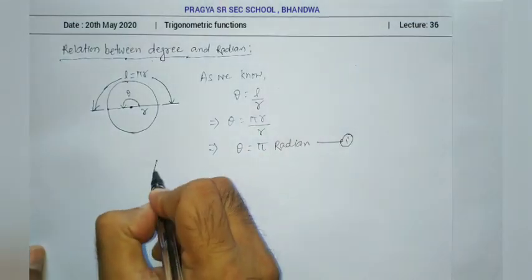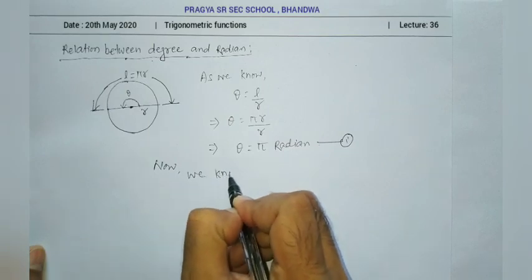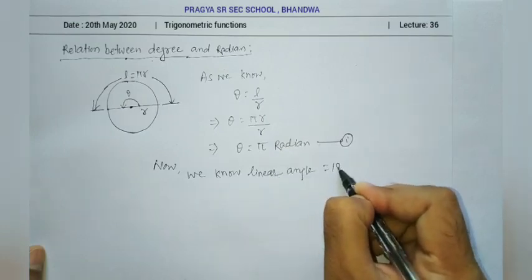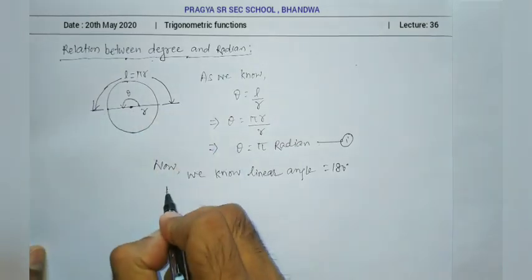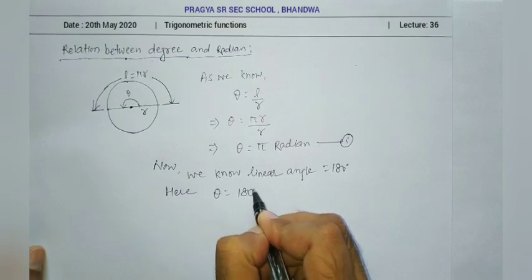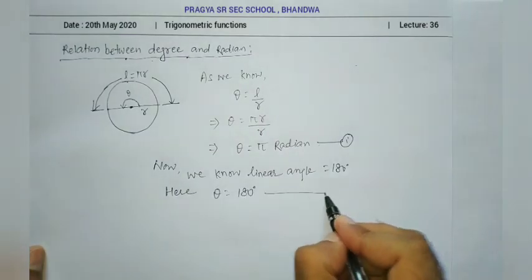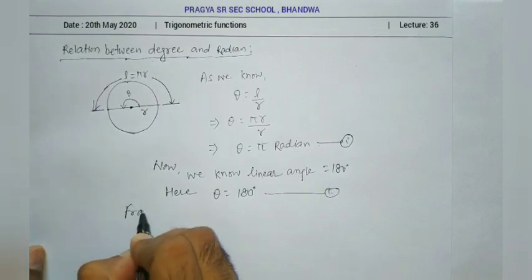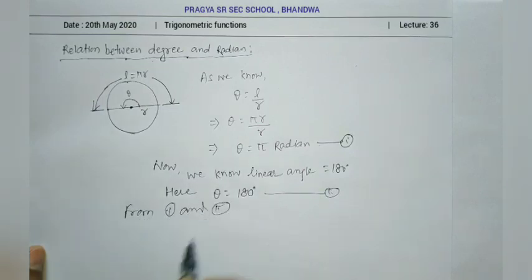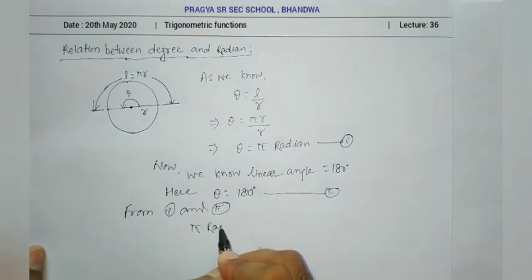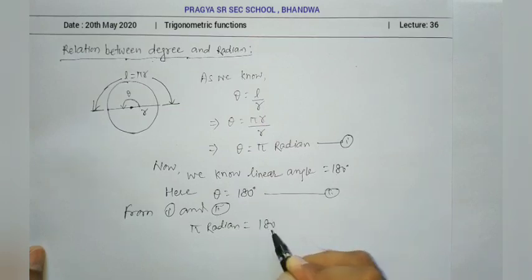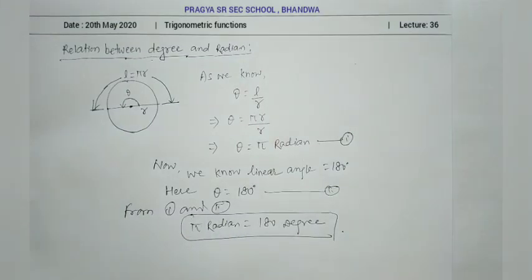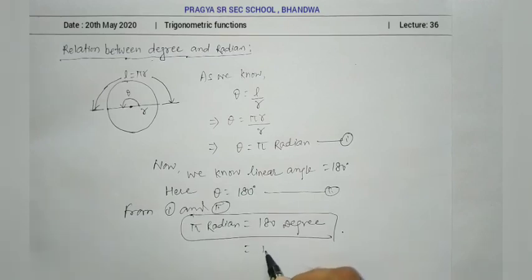So theta equals π radian — call this equation 1. We also know a linear angle is 180 degrees, so theta equals 180 degrees — call this equation 2. Since LHS is the same in both, from equation 1 and equation 2: π radian equals 180 degrees.